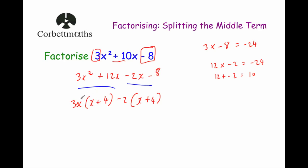Factorising the first half gives us 3x(x + 4). For the second half, minus 2x minus 8, we take out a minus 2, leaving minus 2(x + 4). Both brackets are x plus 4, so we take that out, leaving (x + 4)(3x − 2). So the answer to factorising 3x squared plus 10x minus 8 is (x + 4)(3x − 2).